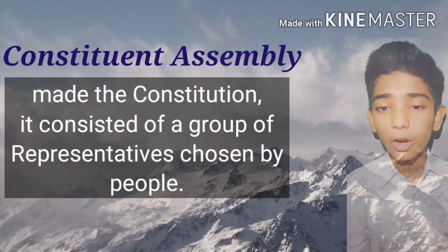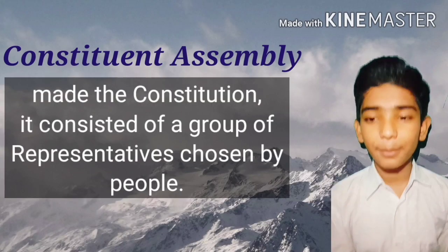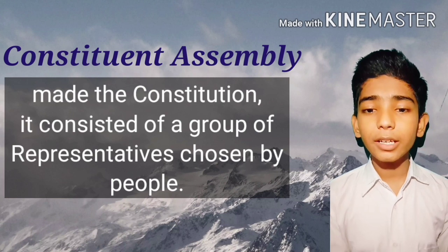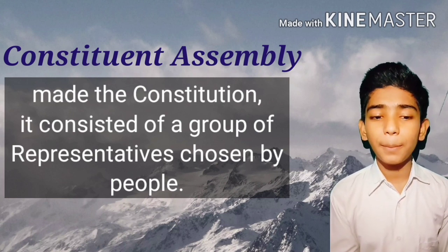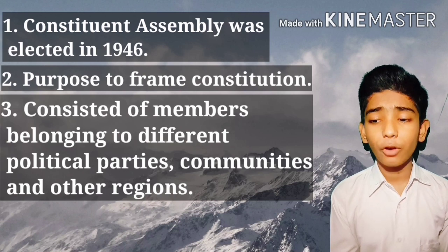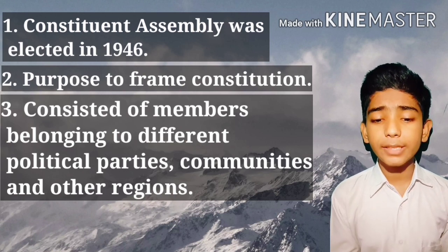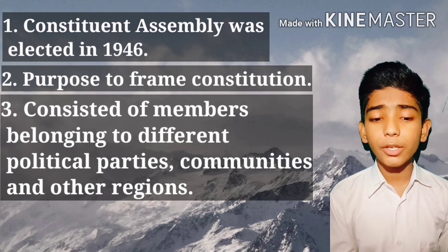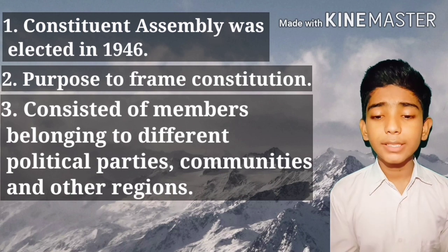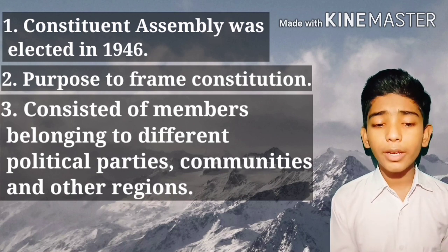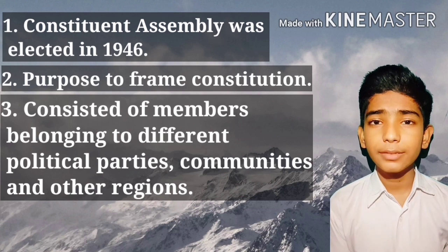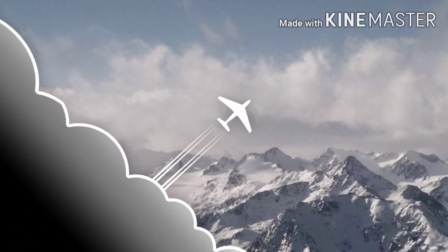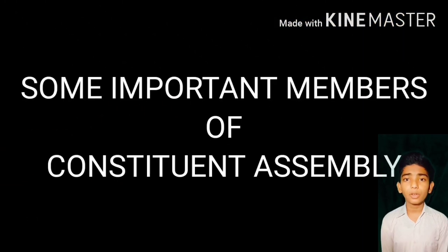The Constituent Assembly made the Constitution. It consisted of a group of representatives chosen by the people. The Constituent Assembly was elected in 1946, with the purpose to frame the Constitution. It consisted of members belonging to different political parties, communities, and regions. The important members of the Constituent Assembly are...